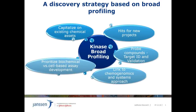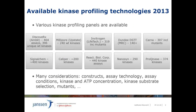Kinase inhibitor profiling is part of the Janssen Kinase Drug Discovery Strategy. The motivation for the project was that kinase inhibitor profiling would enable us to capitalize on existing chemical assets, to identify hits for new projects, to identify probe compounds for target identification and validation, to prioritize biochemical versus cell-based assay development, and to link to chemogenomic and systems-based approaches. At the beginning of the project, we had to answer two key questions. The first was which compound profiling platform to select. The options differ by the number of kinases covered, the assay type format, cell-based versus biochemical, the construct type, and the ATP concentration used in the assay.